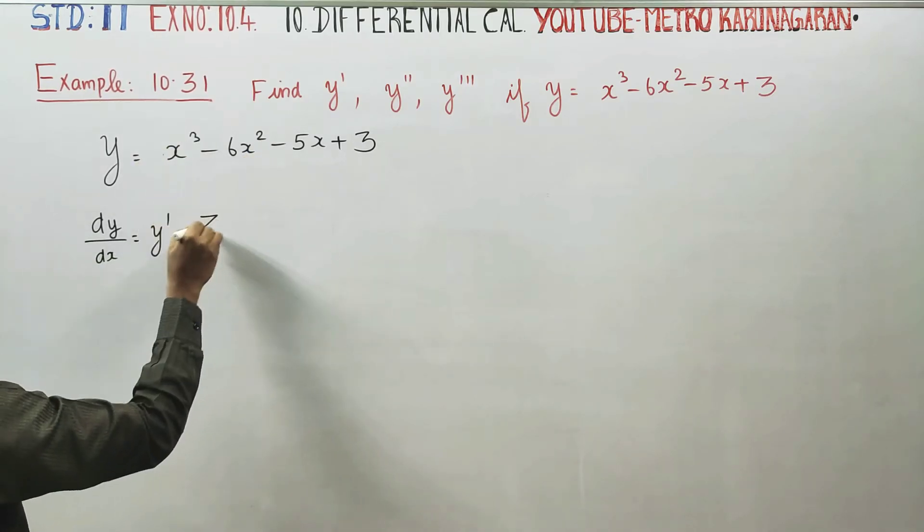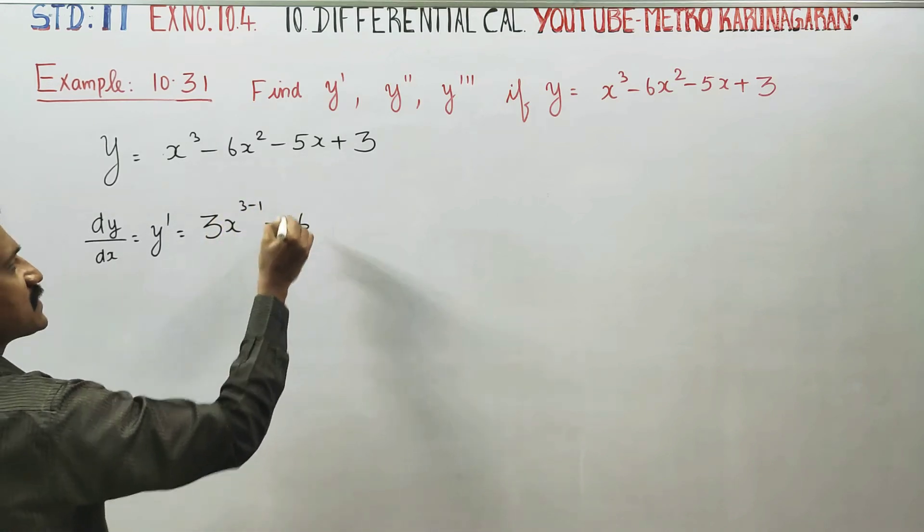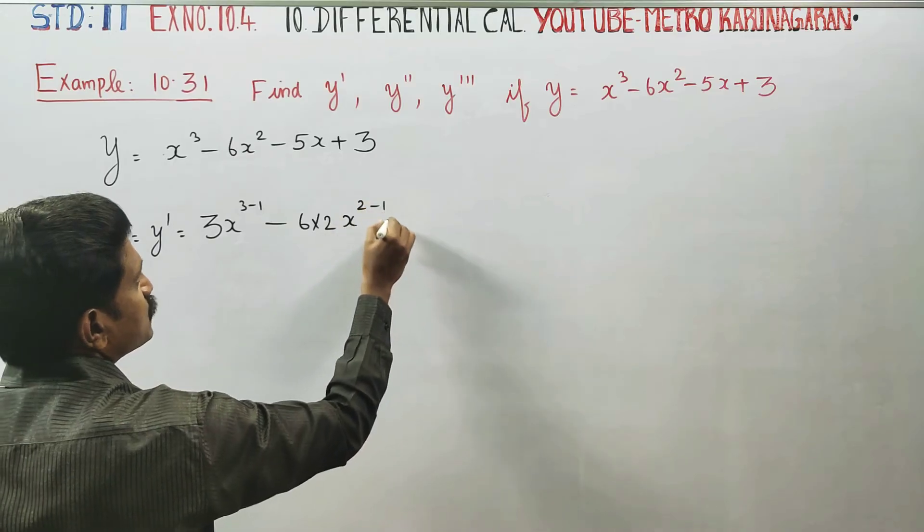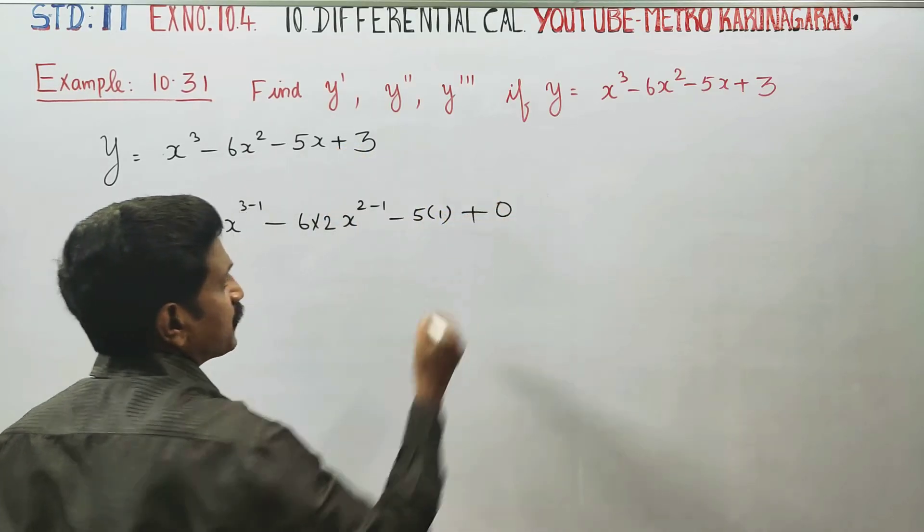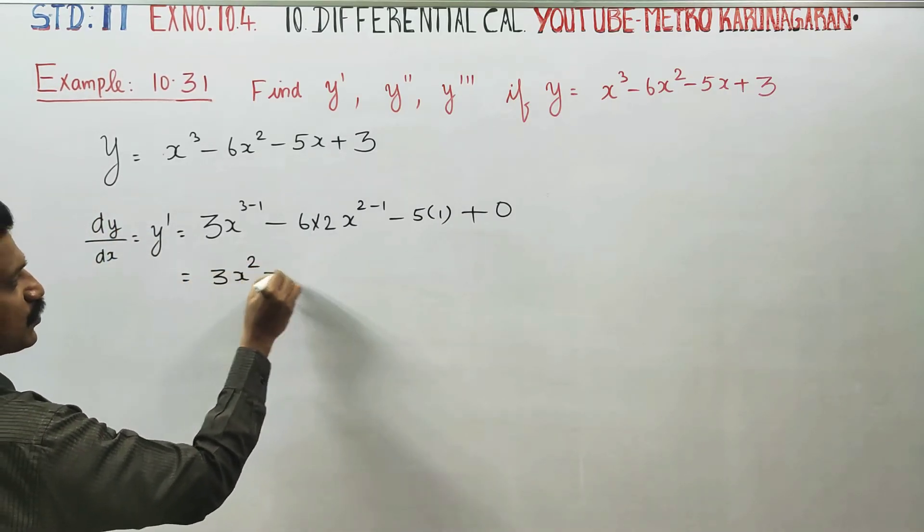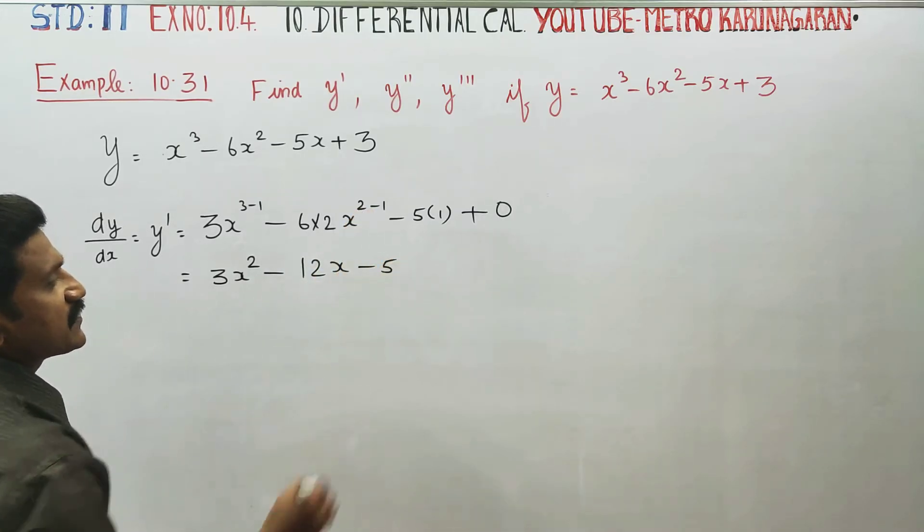Apply the power rule: 3x^(3-1) minus 6 times 2x^(2-1), x differentiates to 1, constant differentiates to 0. Therefore, your answer is 3x² - 12x - 5.